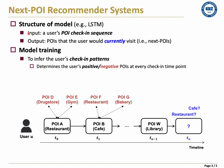First, as input, the model for next POI recommendations employs the user's check-in sequence. Then, from the model, we can obtain POIs that the user would currently visit. To train the model, we determine the user's positive or negative POIs at every check-in time point.